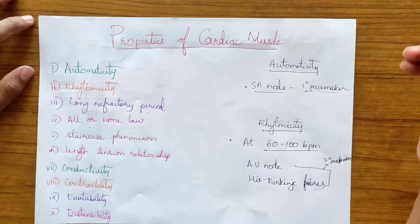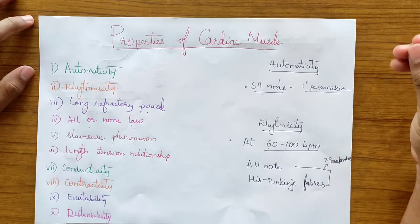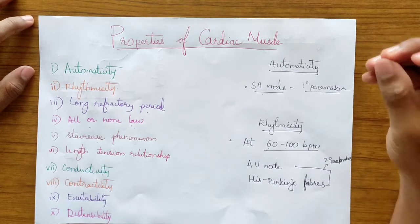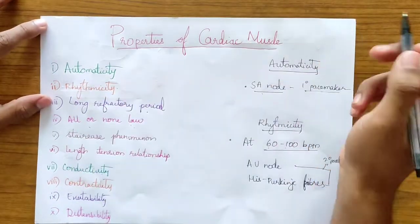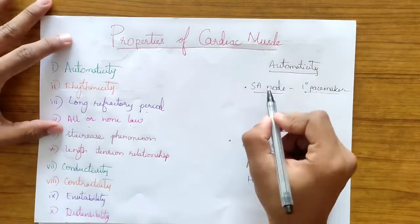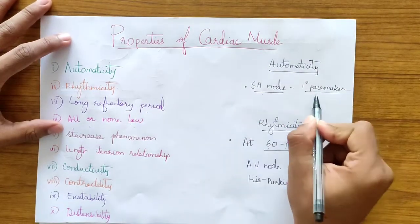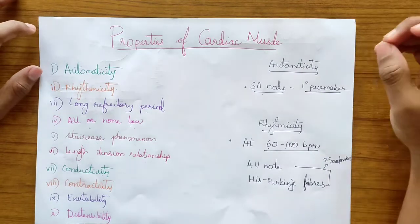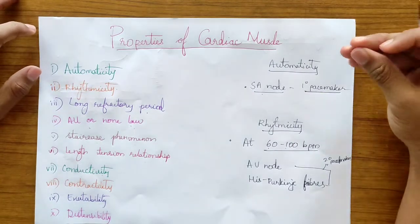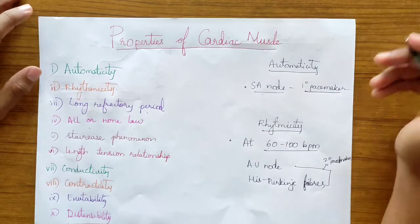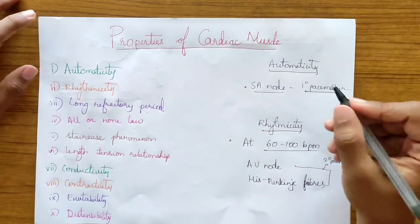Let's start with automaticity. The heart beats irrespective of external stimulation — this is the automaticity feature of the cardiac muscle. It happens due to the presence of the SA node, which is also called the primary pacemaker. The SA node generates spontaneous impulses which cause this automaticity.